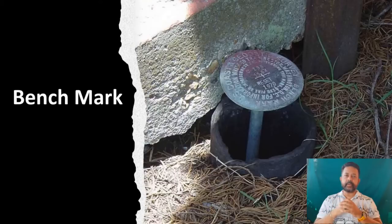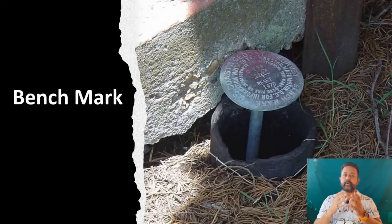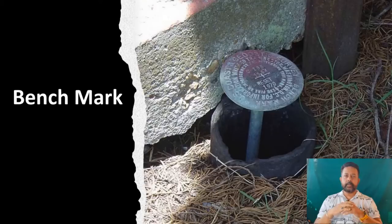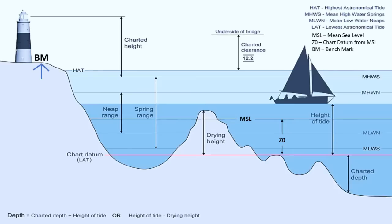And for that we need a physical point somewhere safe on the shore. We call this physical point a benchmark. A vertical datum for that area will be a certain distance below that benchmark. For example, a benchmark says MSL or LAT 4.5 meter. That means the vertical datum MSL or LAT will be 4.5 meter below that benchmark or the physical point.